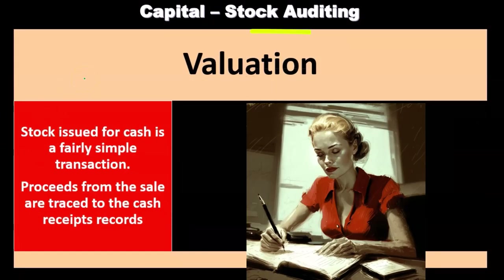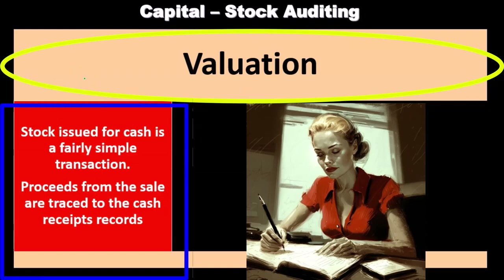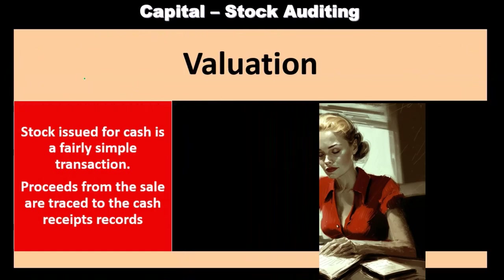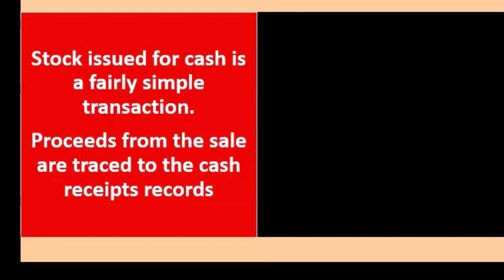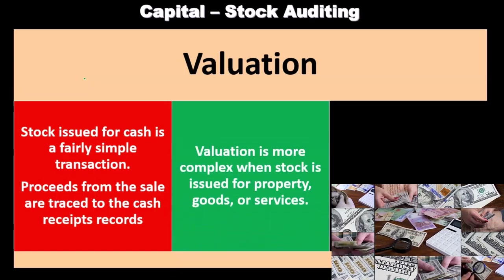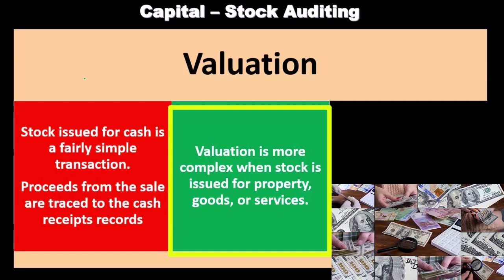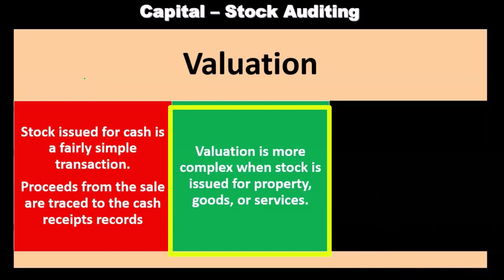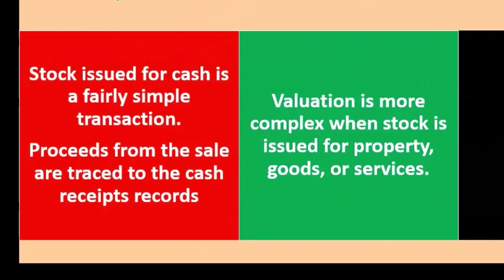Valuation assertion: stock issued for cash is a fairly simple transaction. Because it's typically a market exchange, proceeds from the sale are traced to cash receipts records for valuation. Valuation is more complex when stock is issued for property, goods, or services — the value of the stock and the received property, goods, or services may be harder to determine precisely, making it a more complex valuation even if comparable stock is traded on an exchange.